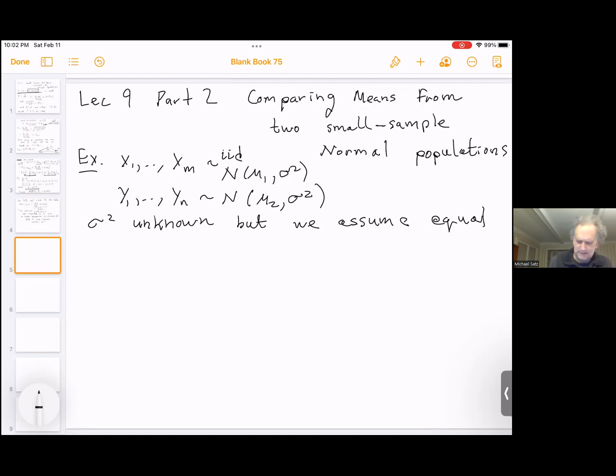Notice that this could be true, right? I could have two different populations, and it could be reasonable to assume that the variances are roughly the same or the same, but that the means might be different. And we want to estimate mu1 minus mu2.